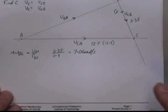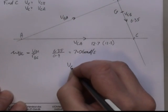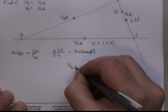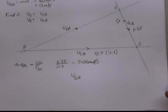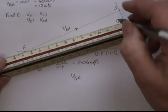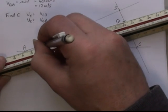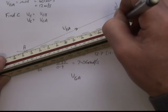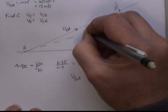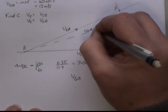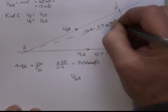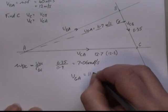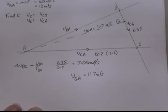What the question is asking for is what is VG relative to stationary point. So I'm looking for GA. GA will be going in through this way. And if we measure that off, VGA is 11.7 meters per second.